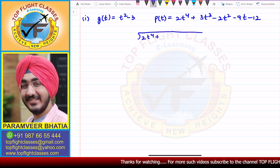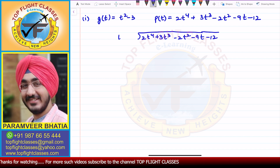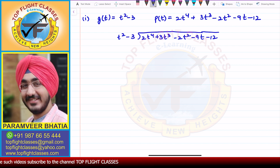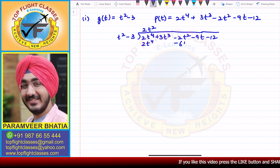We divide 2t⁴ + 3t³ − 2t² − 9t − 12 by g(t) = t² − 3. First, to eliminate 2t⁴, we multiply by 2t²: t² × 2t² = 2t⁴, and t² × (−3) = −6t². So we write −6t² below.